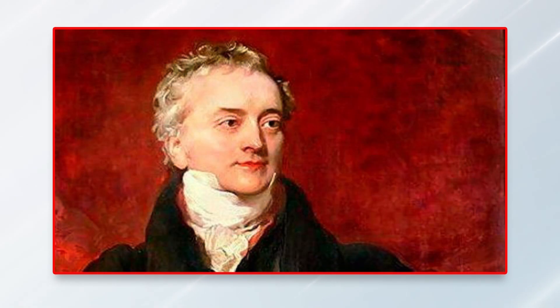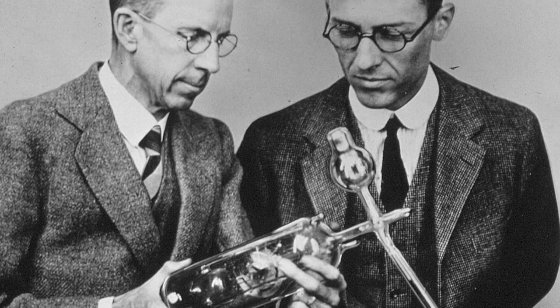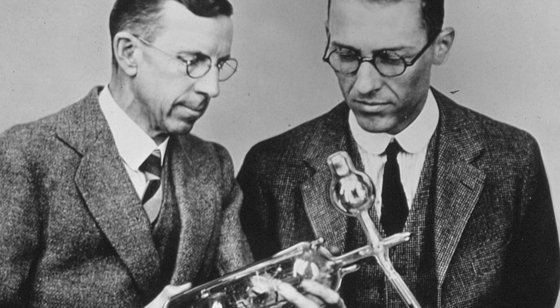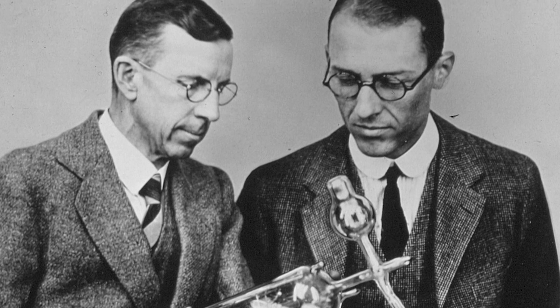This type of experiment was first performed by Thomas Young in 1802 as a demonstration of the wave behavior of visible light. This experiment with light was part of classical physics. In 1927, Davisson and Germer demonstrated that electrons show the same behavior, which was later extended to atoms and molecules.